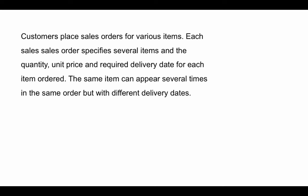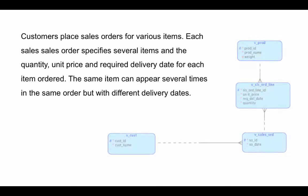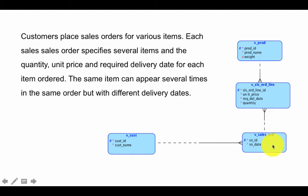We already know from prior discussion that whenever there is a many-to-many relationship you have to have an associative entity. We've seen the reasons for this in prior lectures and you will do very well to review that section — it is central to understanding entity relationship diagrams. So we create a new entity type called sales order line as the associative entity between sales orders and products.